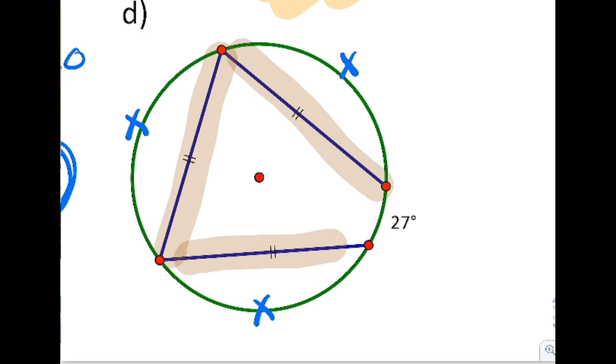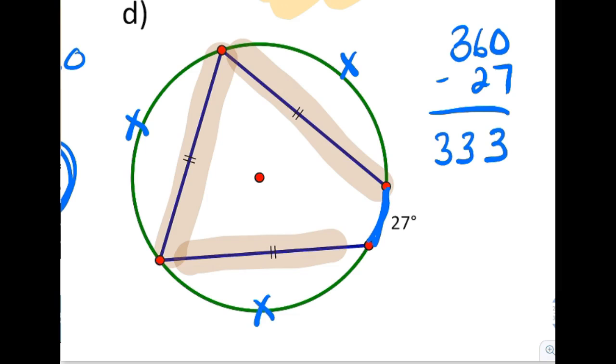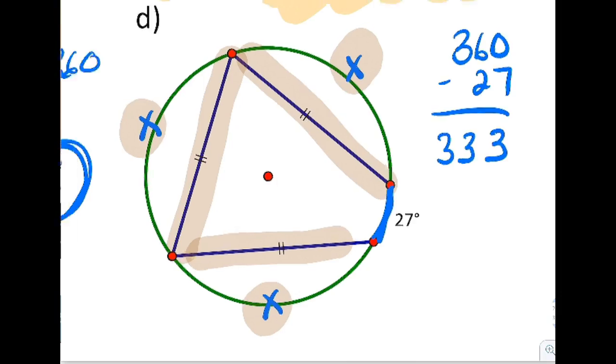So if you started with 360 and took away this random 27-degree piece that sticks out, you end up with 333 degrees left in the circle that you then must divide equally among the three parts.